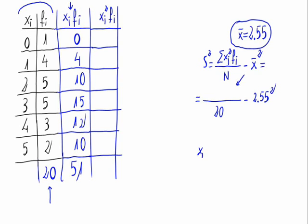We can see that x squared times f sub i is the same as x sub i times x sub i times f sub i. That's the same as multiplying the previous column that we had times x sub i.